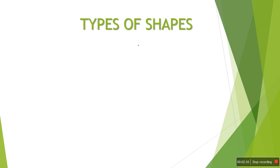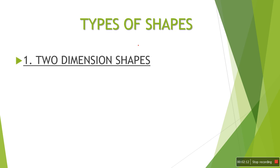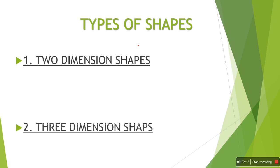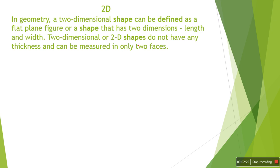Now, how many types of shapes do we have? There are two types: the first type is two-dimensional shapes and the second type is three-dimensional shapes. We will study them one by one.